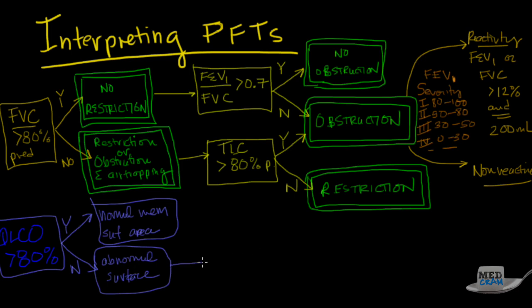However, the next thing to look at is the DLCO divided by the alveolar ventilation and if it is greater than 80% of predicted. Now remember what we're looking at here. We're seeing whether or not the DLCO divided by the alveolar ventilation is still pretty good. This is an indication and distinguishing characteristic between extrinsic and intrinsic lung disease. For yes it would be extrinsic and for no it would be intrinsic.